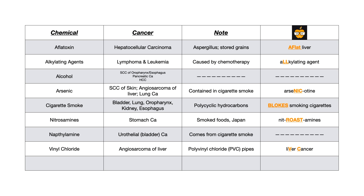Next, we've got vinyl chloride. Vinyl chloride causes angiosarcoma of the liver. This is classically seen in people who work in industries that produce polyvinyl chloride (PVC) pipes — the plasticky pipes used in plumbing applications. On test day, look for occupational exposure from someone who works with PVC pipes. My mnemonic: 'liver cancer,' emphasizing the V in liver and the C in cancer — VC stands for vinyl chloride and polyvinyl chloride.